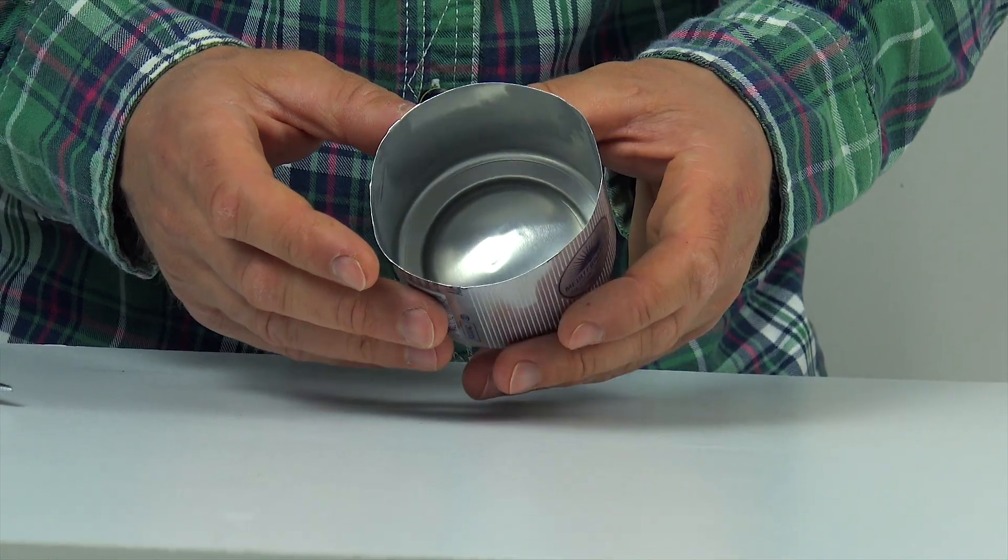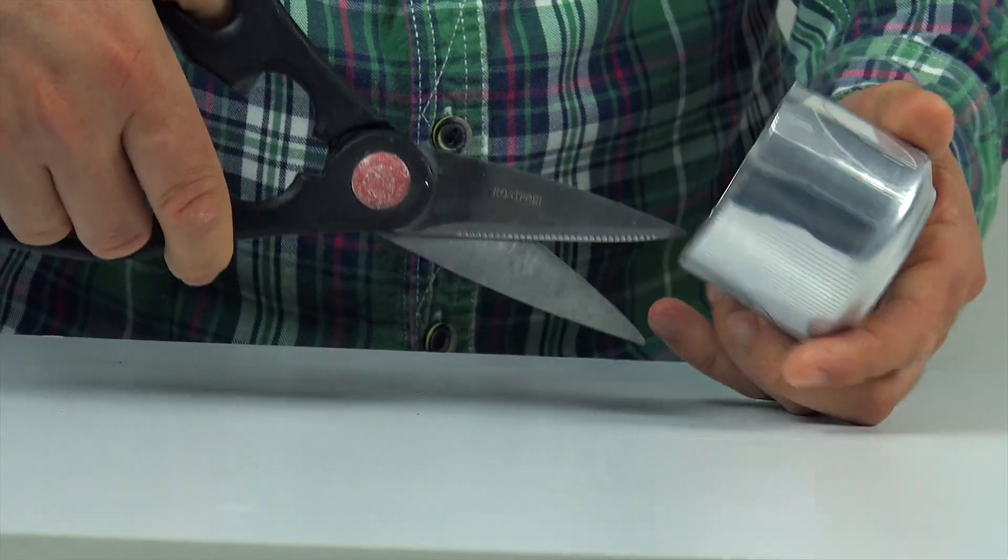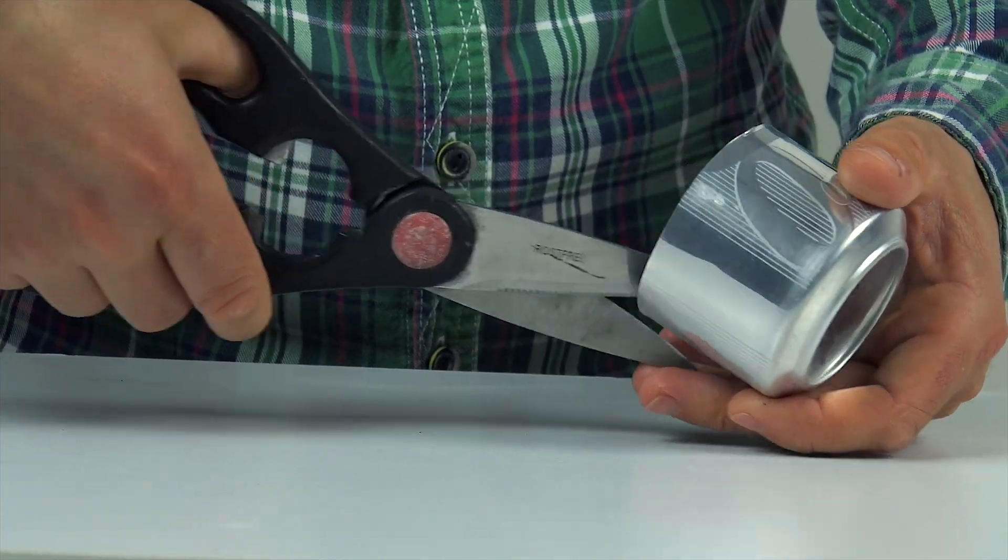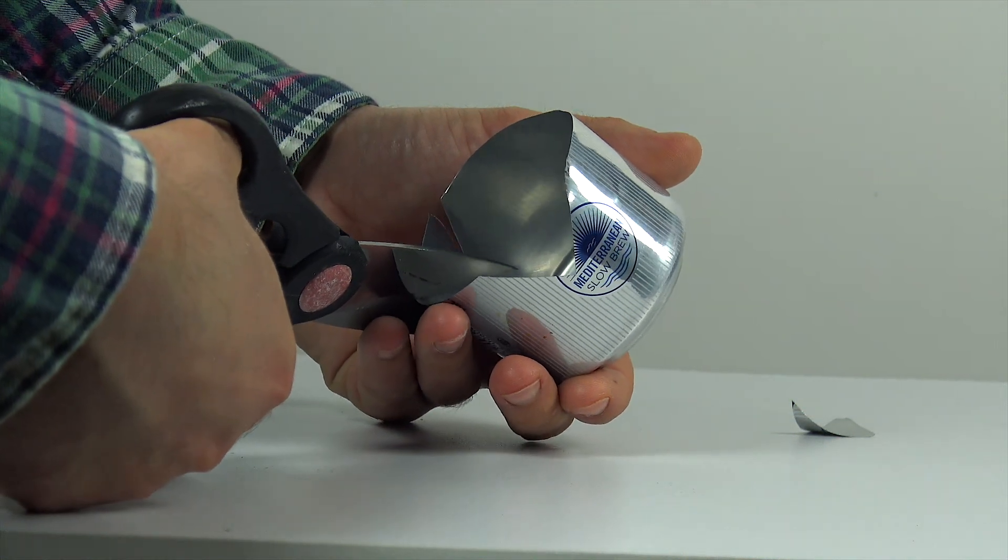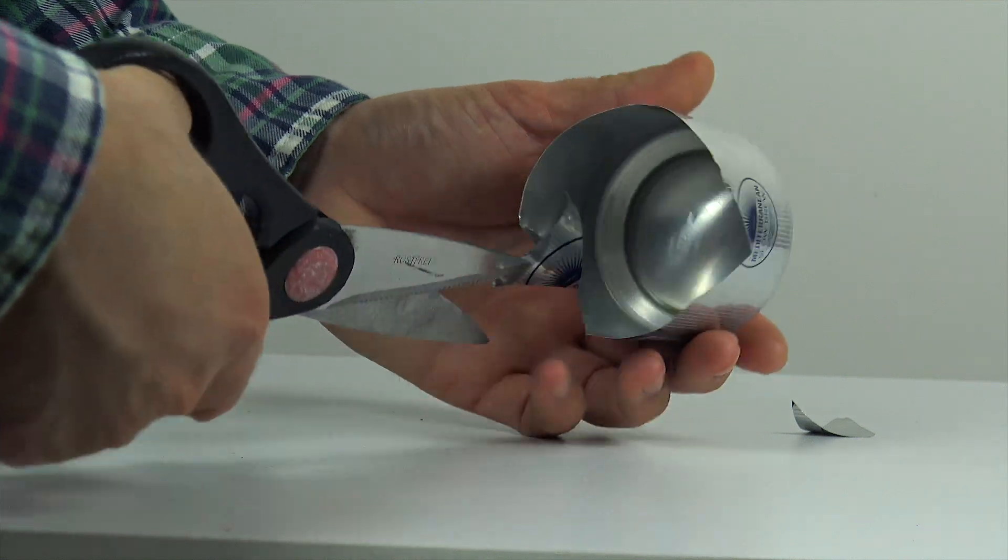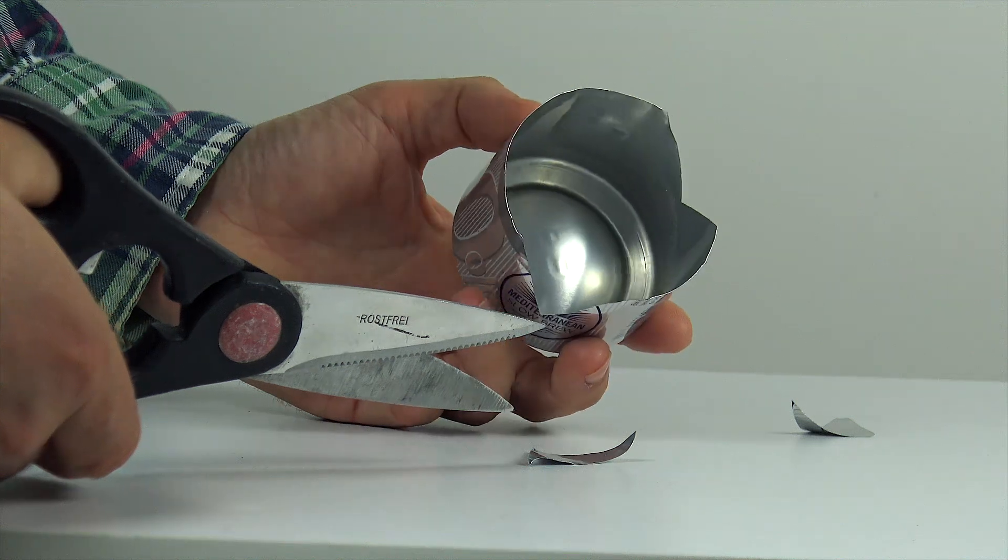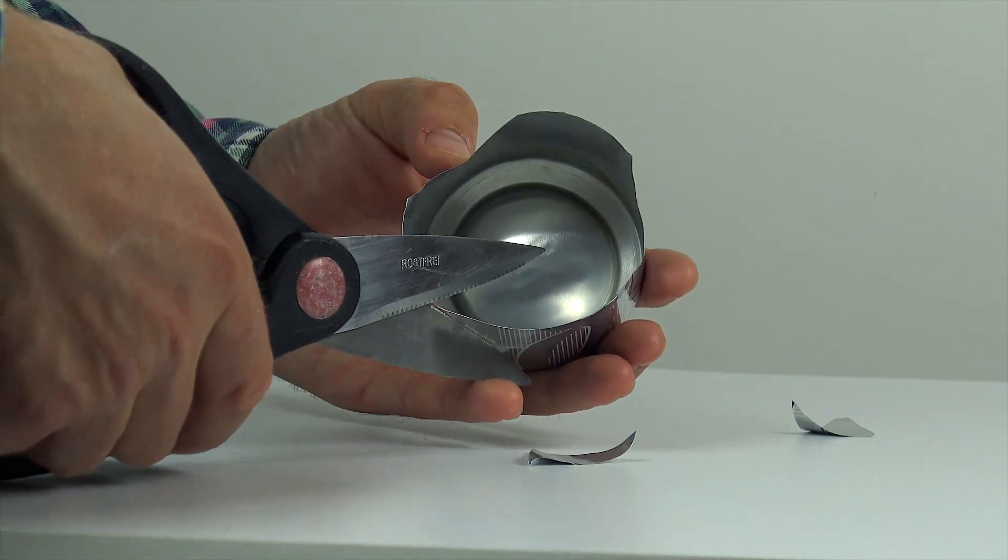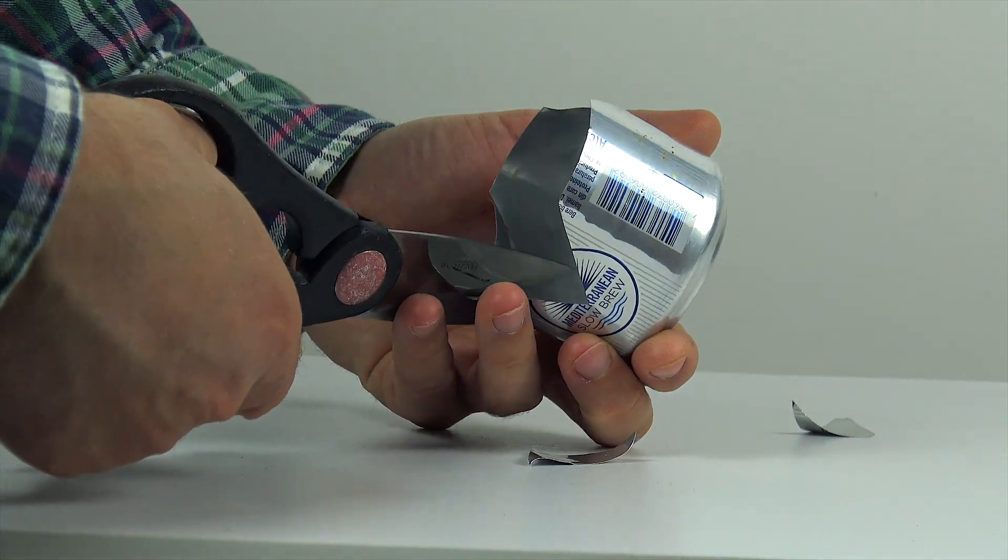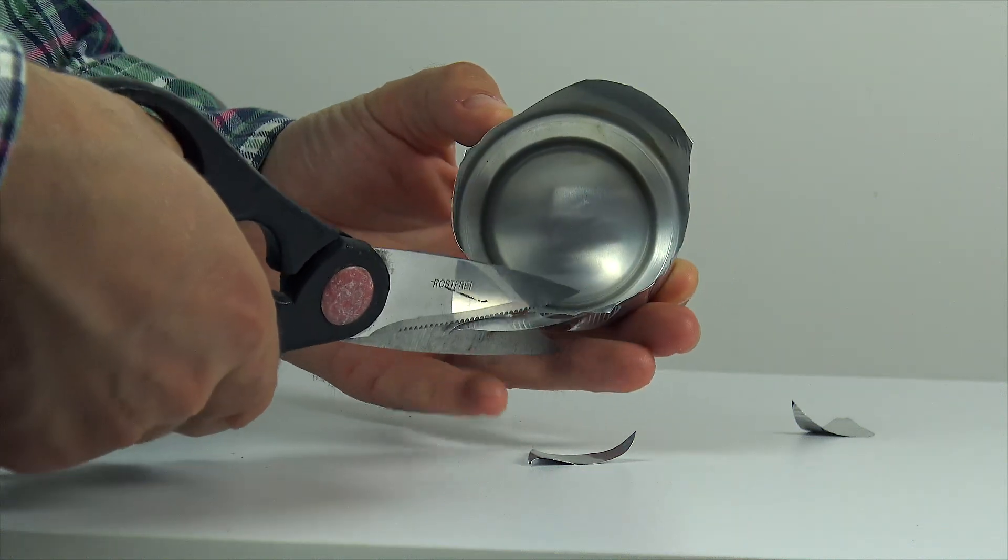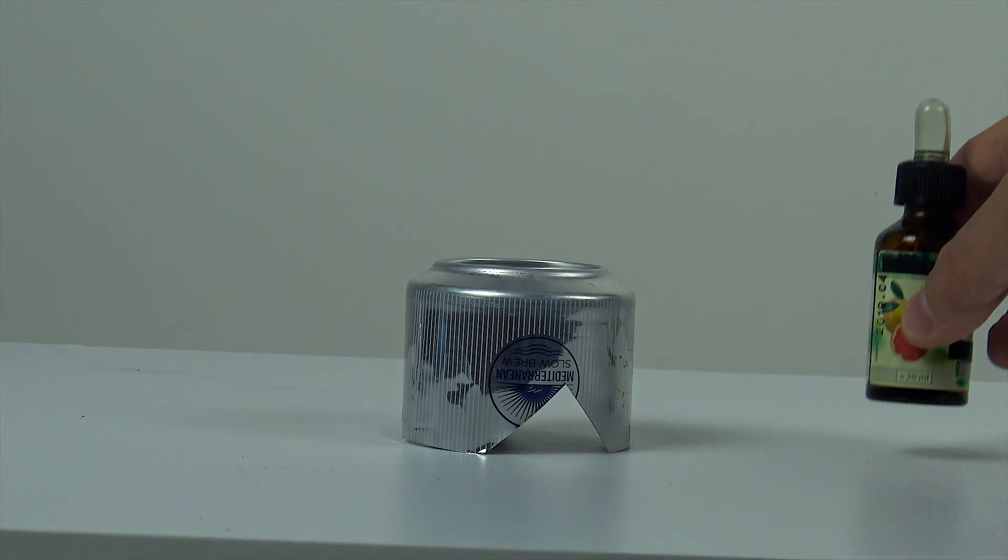Smooth out the bottom with scissors so it stands nice and steady. Then cut out three little triangles, and just like that, you've got a tiny tripod stand. Almost looks like something from a fancy designer shop, but hey, this one's free.